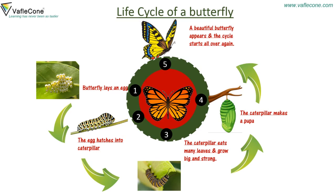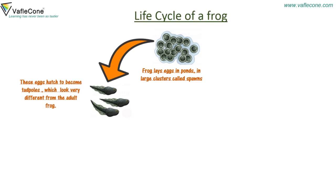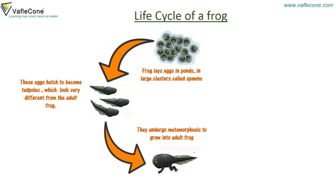Life cycle of a frog: the frog lays eggs in ponds in large clusters called spawns. These eggs hatch to become tadpoles, which look very different from the adult frog. They undergo metamorphosis to grow into an adult frog.